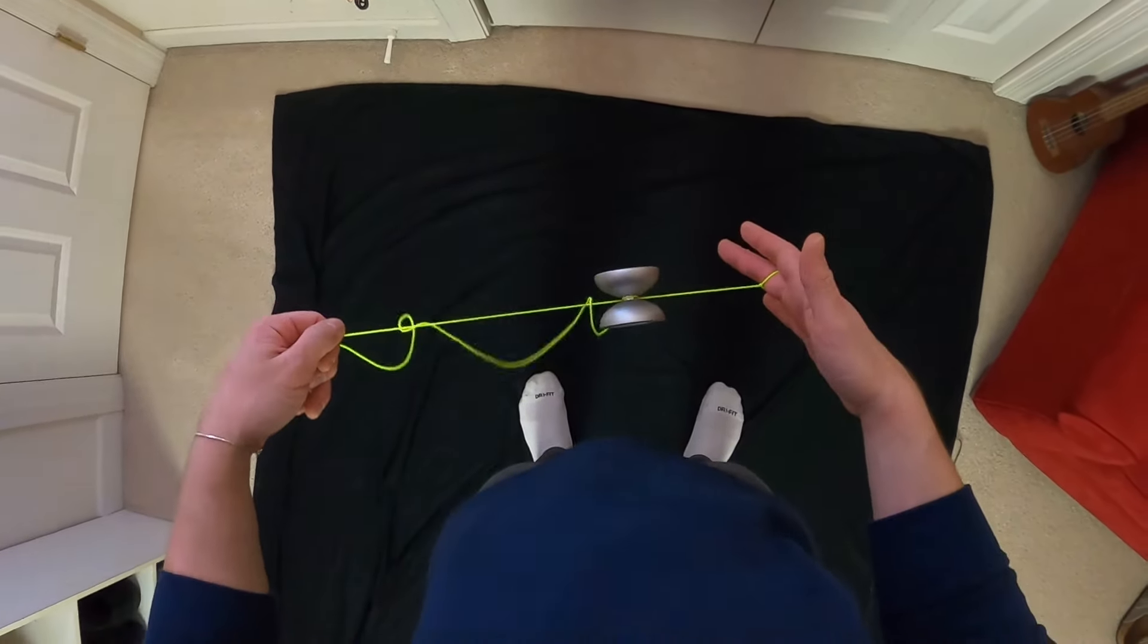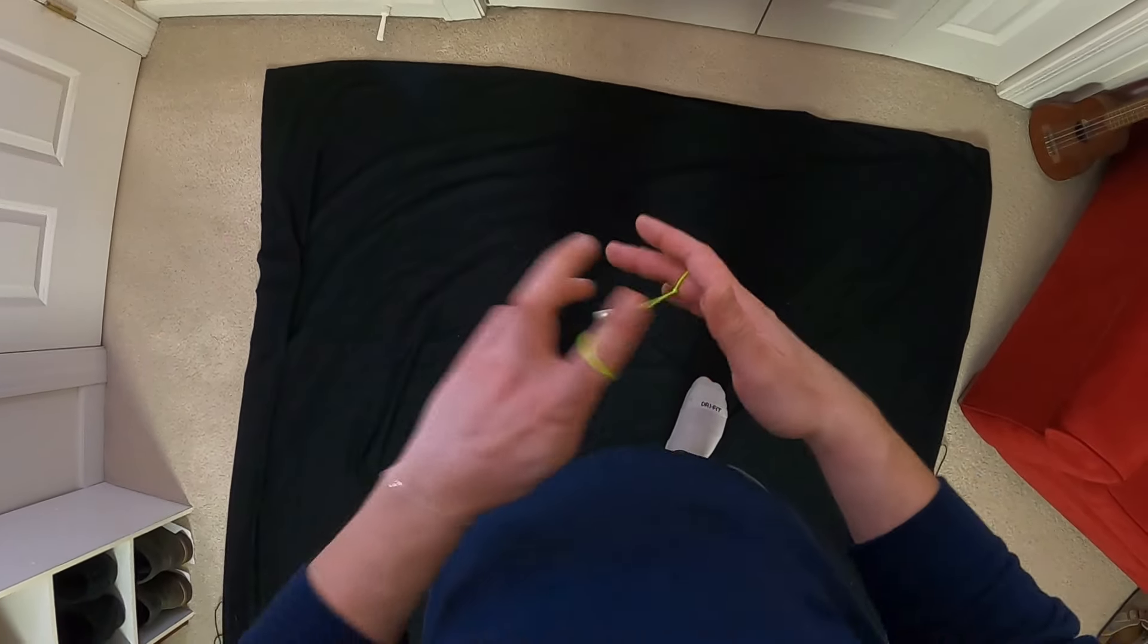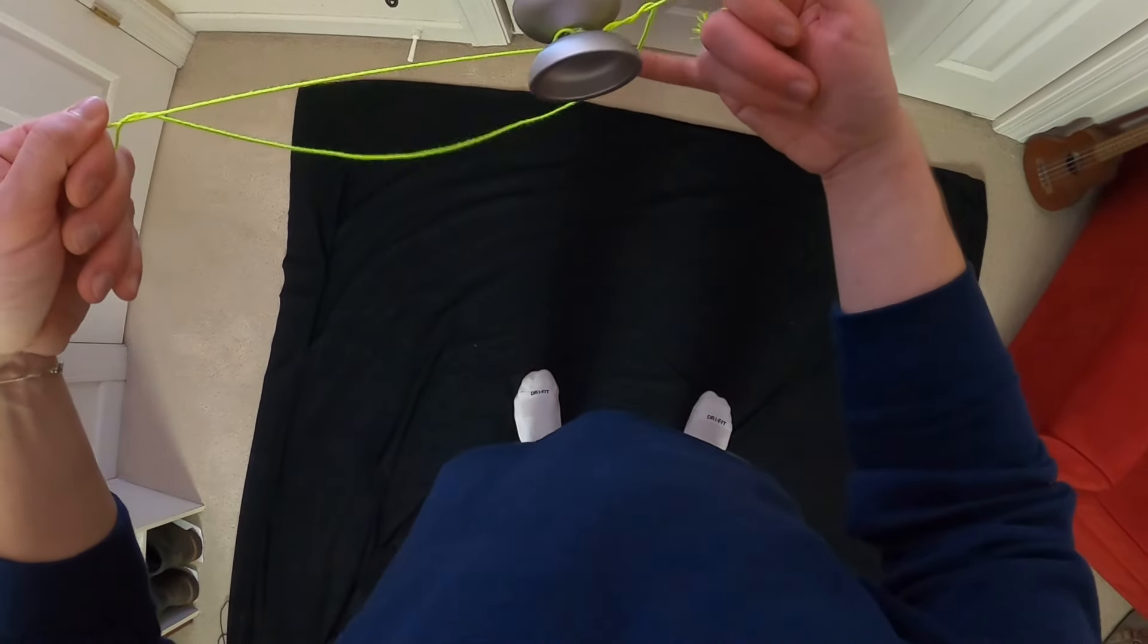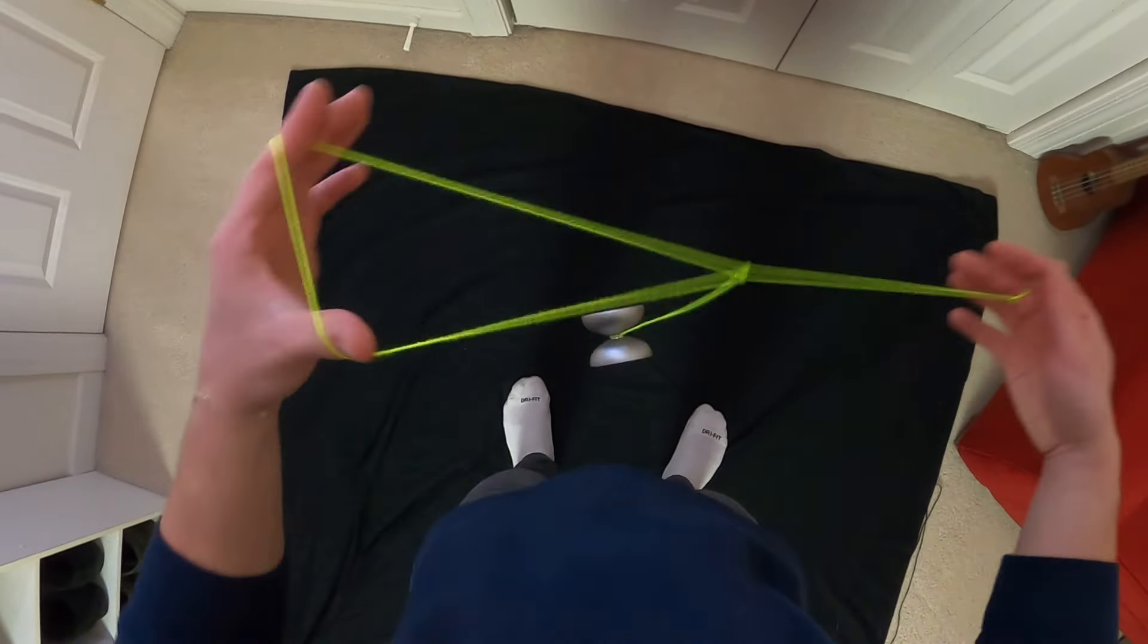Now if you do this trick way too close and your hands are like this close together, that's going to be an issue because the slack is going to be so big that it might loop over the actual yoyo entirely. This is not what you want because then you can get a knot right there.